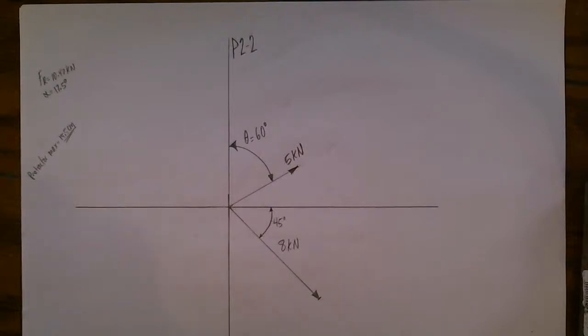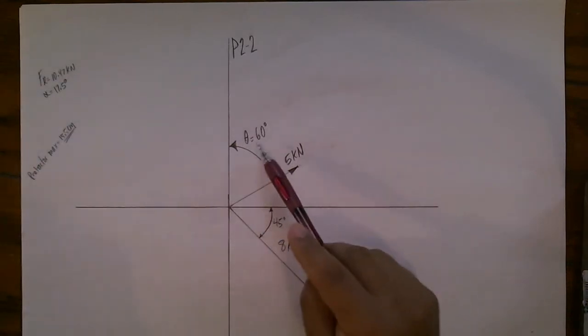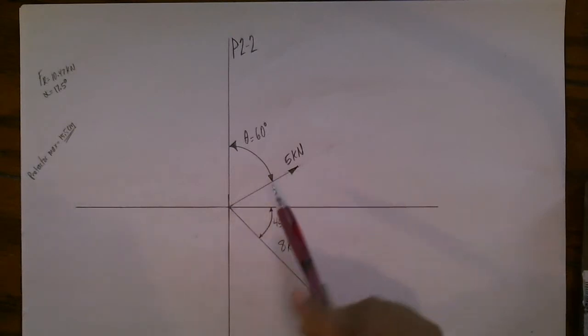Okay, here we have problem 2-2 from the Hibler statics book, 12th edition. We're given this angle 60 degrees, we're given this 5 kilonewtons, this is 45 degrees and 8 kilonewtons here.